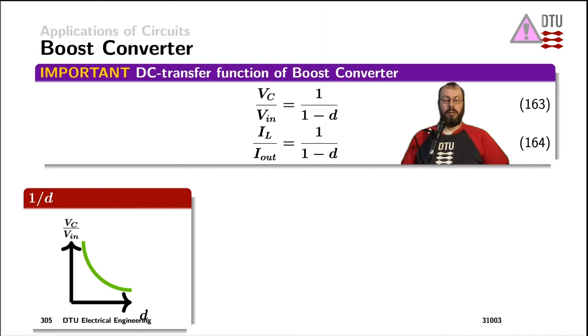Again, we can have a look at the average voltage across the inductor and the average current through the capacitor. And if we solve those equations, we get the DC transfer function for the capacitor voltage as a function of the input voltage of a boost converter.